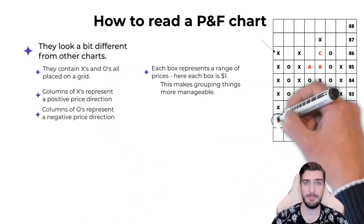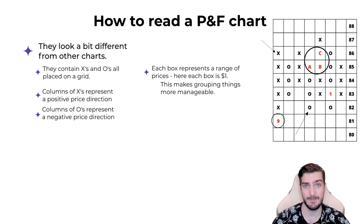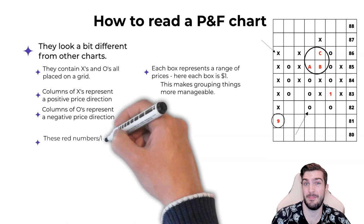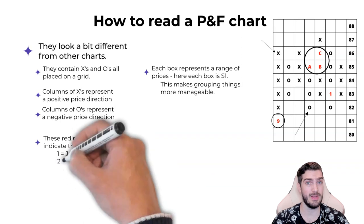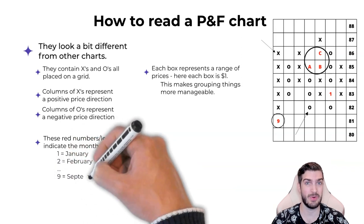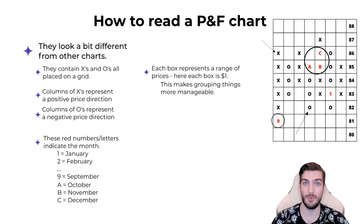You might also see a few red numbers around the chart, or even A, B, and C. These refer to time. Point and figure gives us some understanding of time through these numbers and letters, where each corresponds to a part of the calendar. 1 is January, 2 is February, all the way down to 9 being September. Then, because 11 doesn't work well as a single character, we go to A for October, B for November, and C for December.